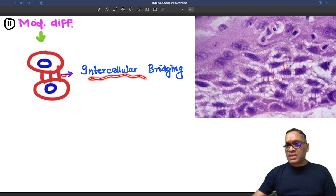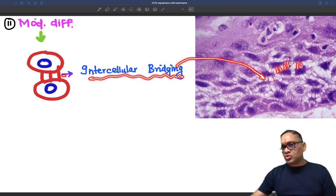Now this is the moderately differentiated Squamous Cell Carcinoma. As I have told you, they will be having intercellular bridging and you can see there is intercellular bridging in between these tumor cells.